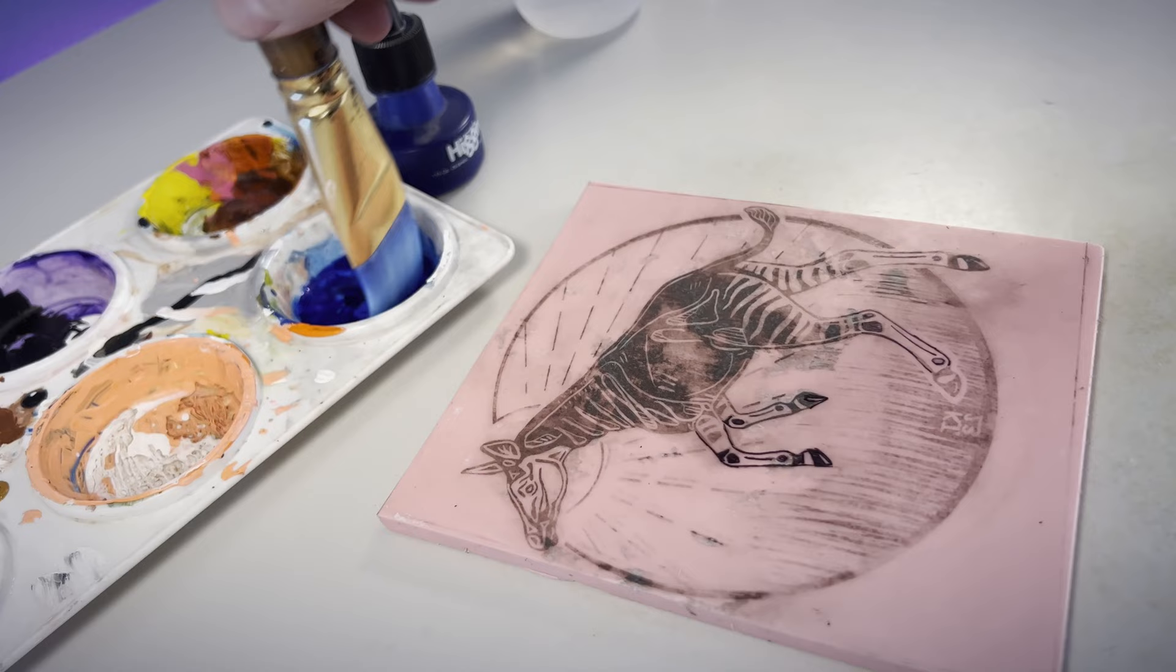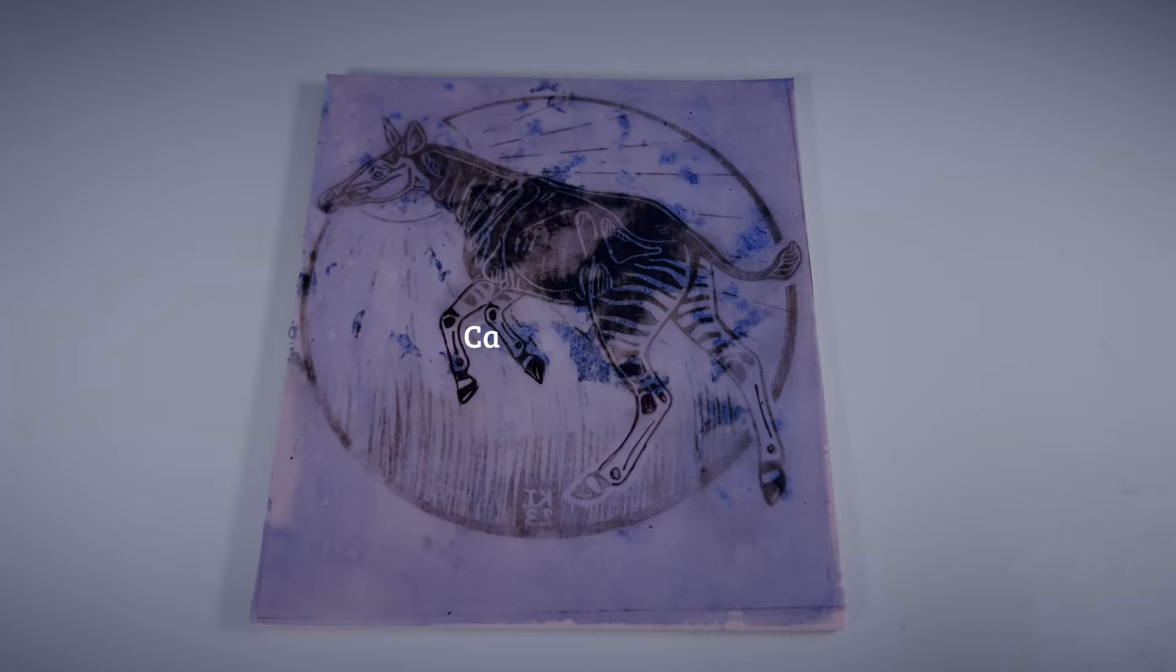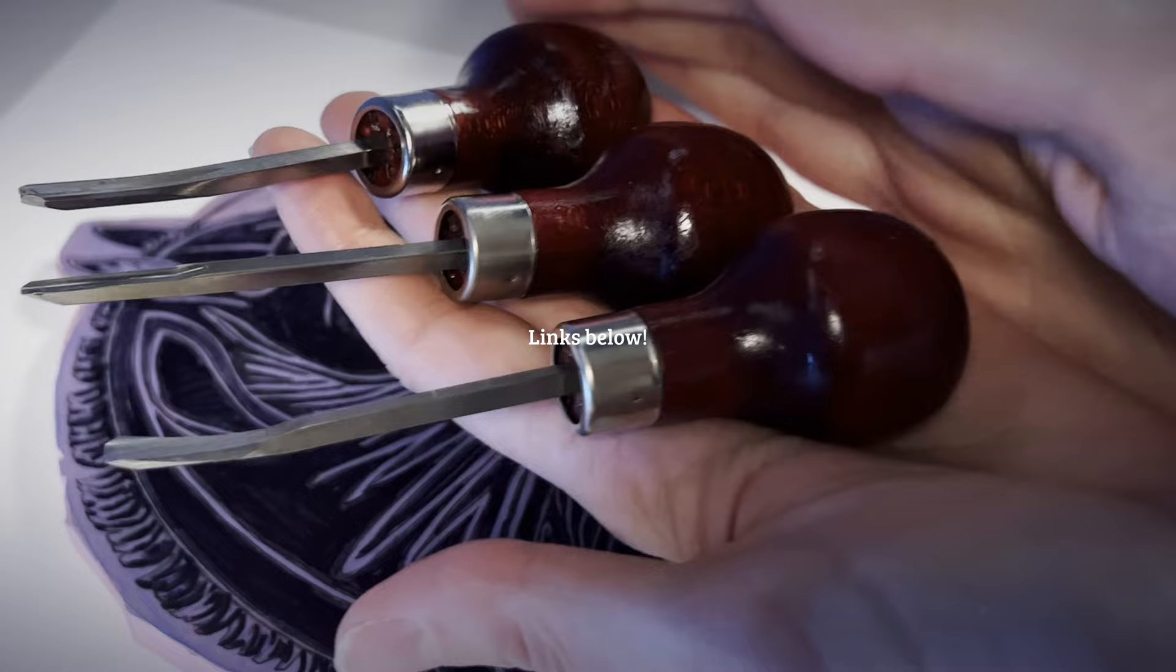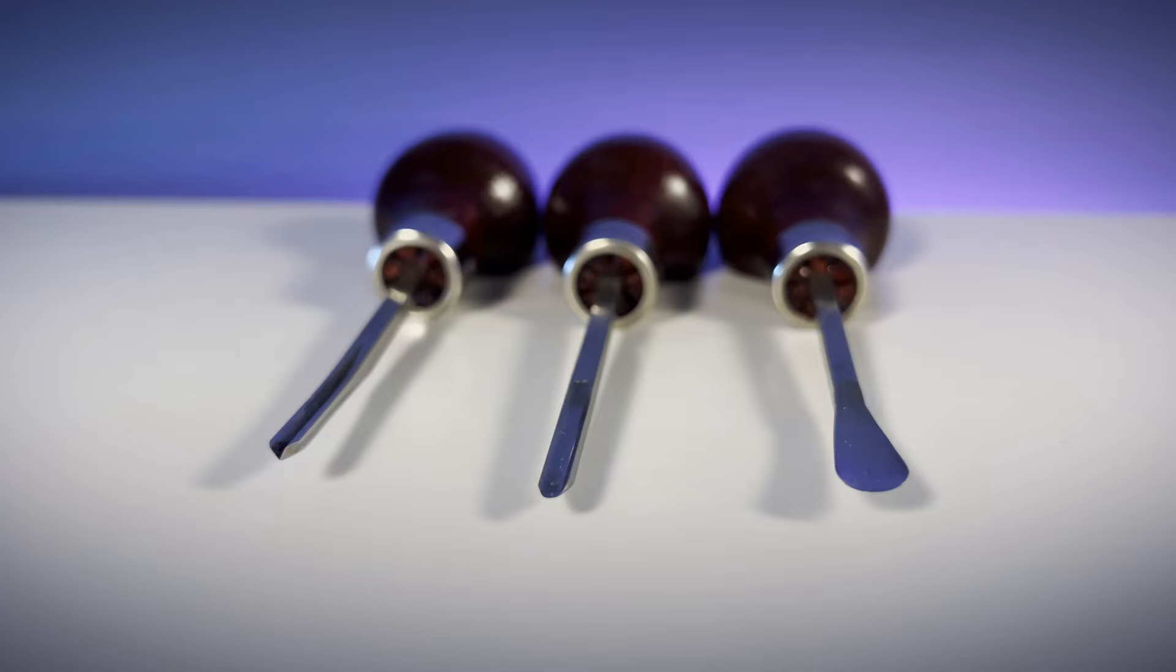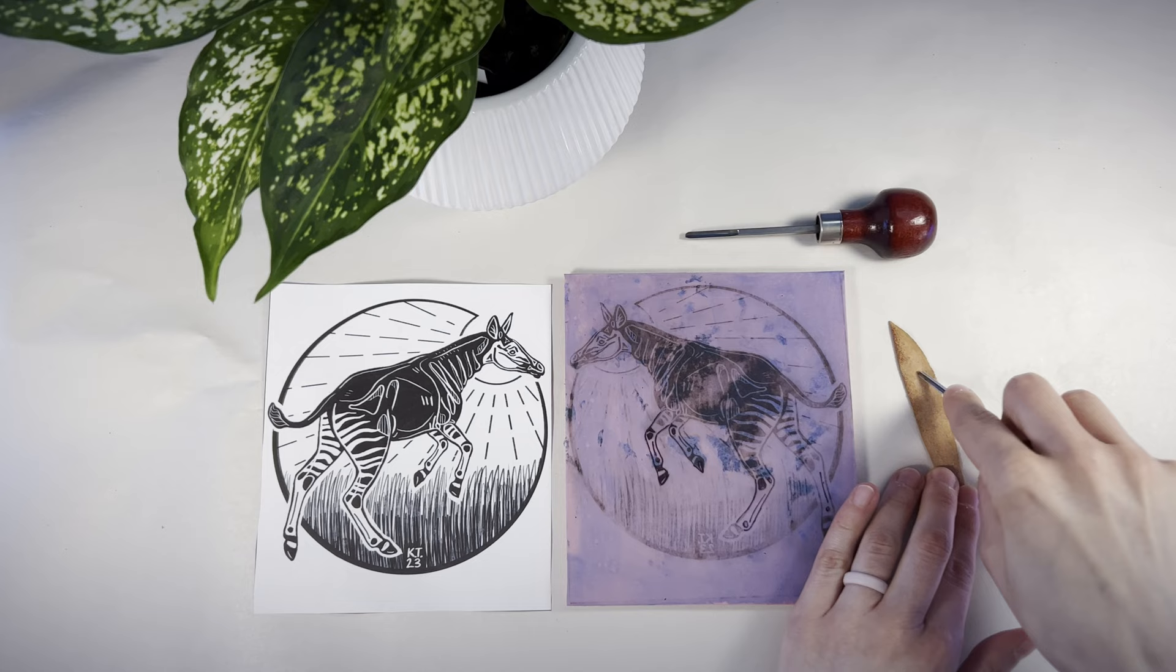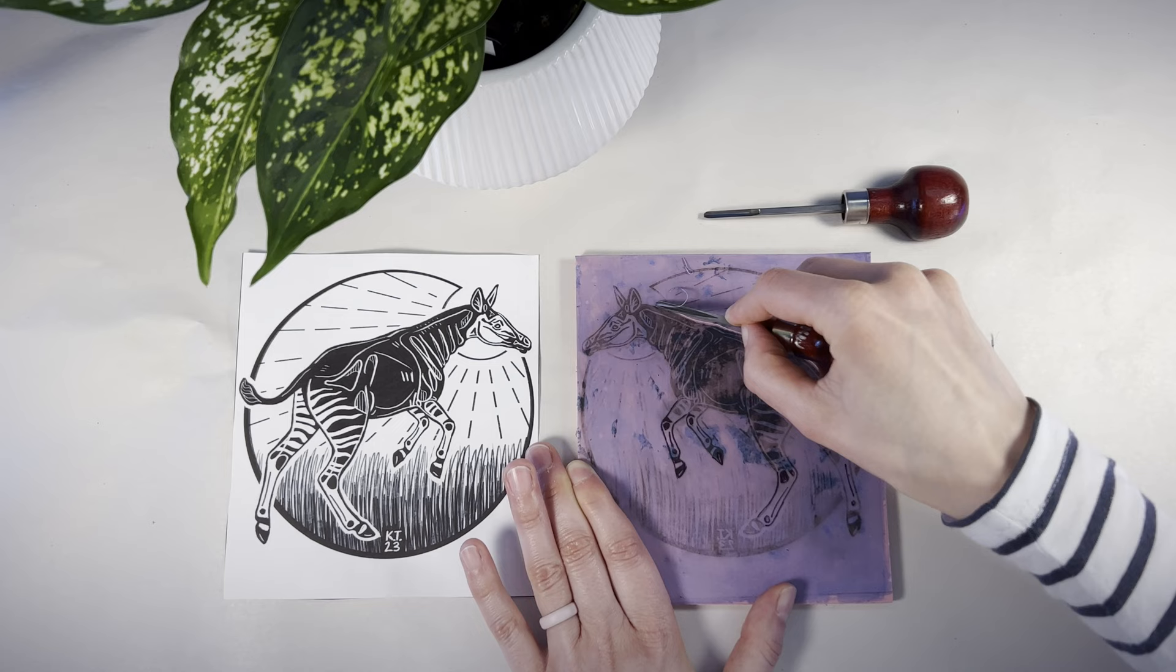A coat of blue ink helps with the next stage, carving. I use an assortment of lino cutting tools, though these three are my most used. They're linked below. And here's my favourite part where I get to put on some music and get lost in relaxing carving.